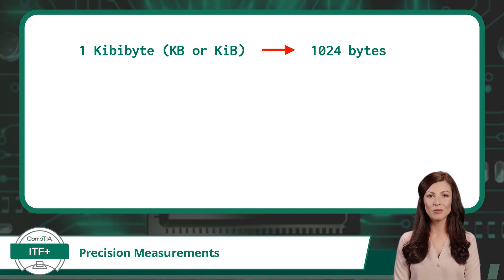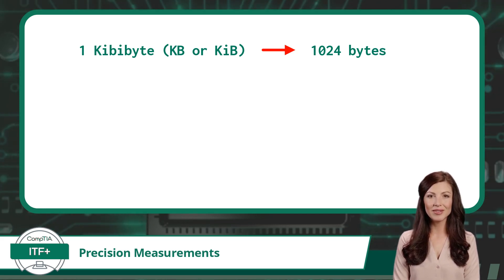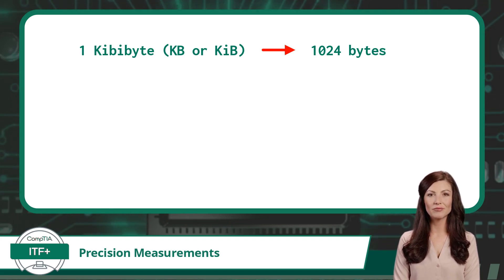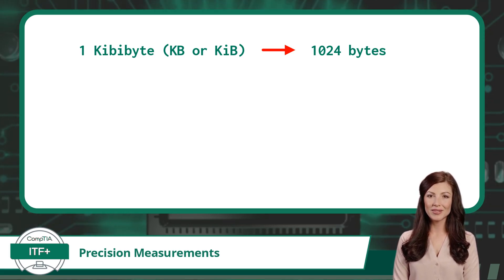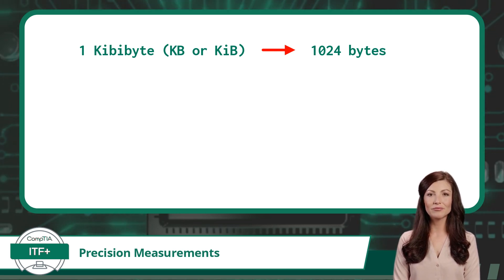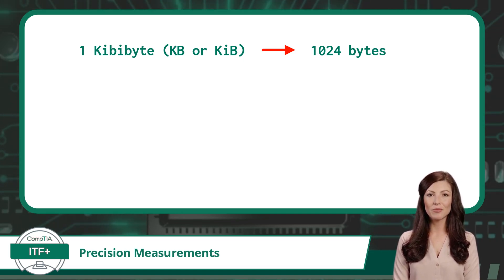Now let's take a closer look at these precision units of measure. For simplicity we will just cover bytes, but any principles we apply here will also apply to bits and bits per second. First, notice that 1024 bytes equals a single kibibyte. The prefix 'kibi' has replaced 'kilo,' and a kibibyte can be represented as KB or KiB.